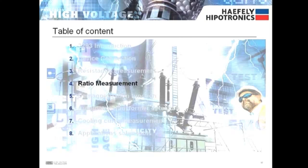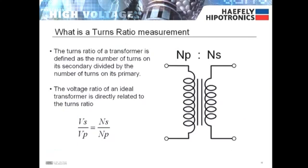Next is turns ratio measurement. The turns ratio of a transformer is defined as the number of turns on its secondary divided by the number of turns on its primary. The voltage ratio of an ideal transformer is directly related to the turns ratio.